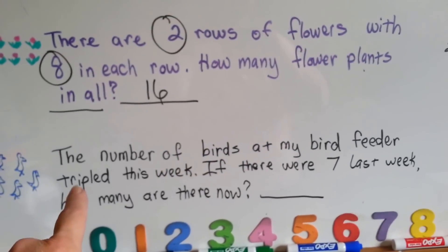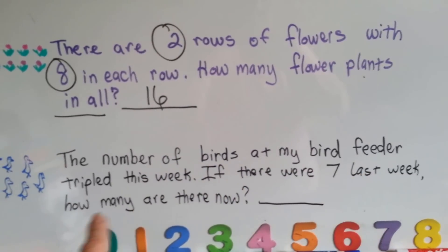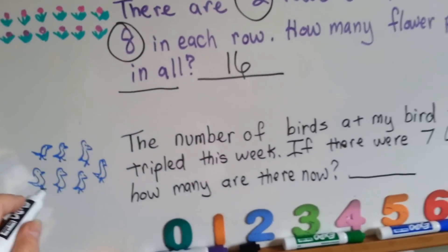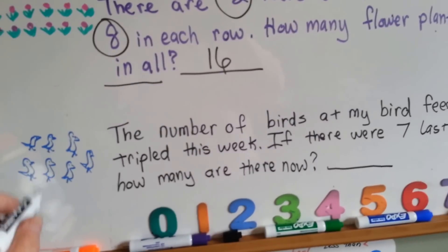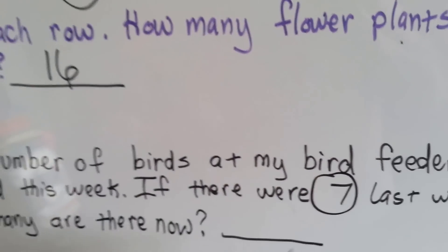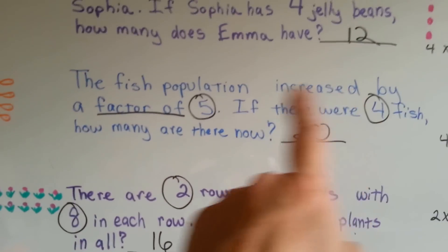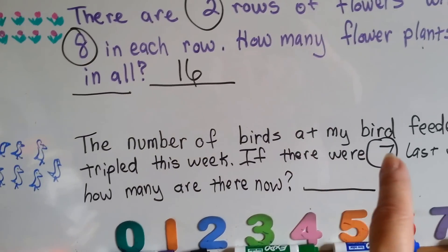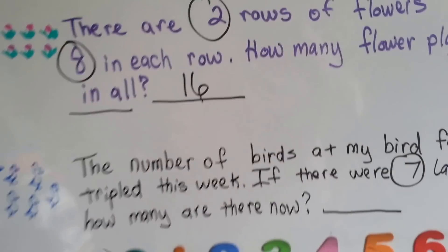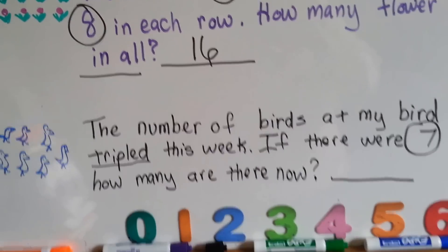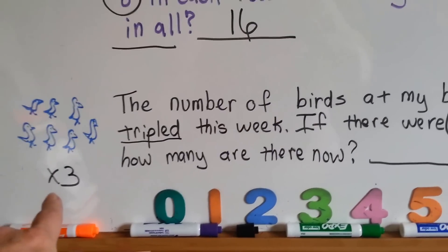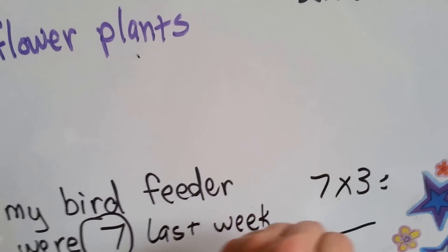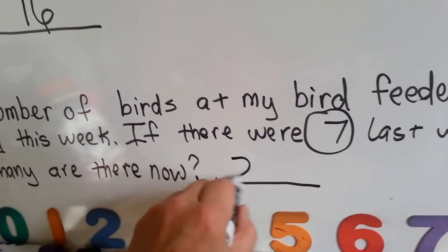The number of birds at my bird feeder tripled this week. If there were seven last week, how many are there now? Tripled — that's a clue word that it's multiplication. Last week there were seven birds and now it's tripled. We need to find the number that we multiply by seven. Tripled means times three, so the number of birds went up times three. If there were seven, we do seven times three. Seven times three is twenty-one. Now I have twenty-one birds at my bird feeder.